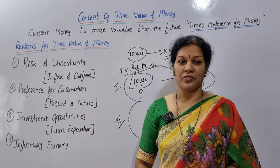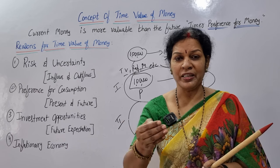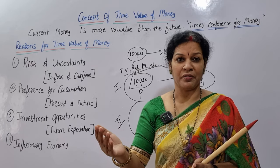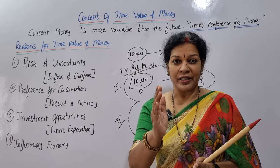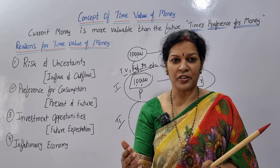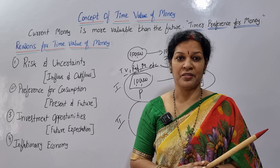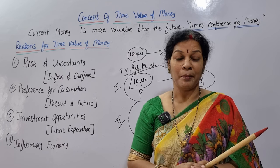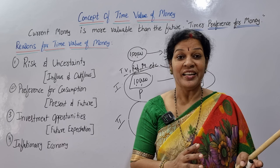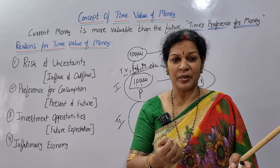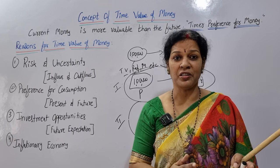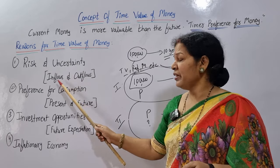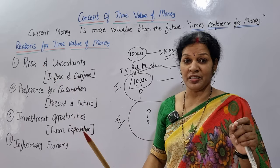Under risk and uncertainty, we can discuss two points: cash inflows and cash outflows. Cash outflows — payments to creditors, buying goods, investing, paying daily wages, operating expenses — are to some extent in our hands. But cash inflows may not be, as they depend on the situation. Sometimes we get profits, sometimes we don't — due to recession, market conditions, inflation, or whatever reason. Based on inflows and outflows, we have risk and uncertainty, which is a main reason to calculate Time Value of Money.